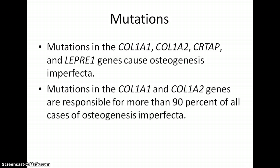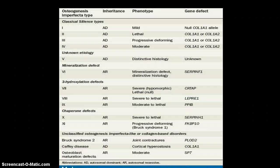Here are some mutation locations — I'm not going to go into detail on them as this is very detailed — along with their inheritance type and genotype. As you can see, there are quite a few recessive cases listed, but they're rarer and don't fall under the classical types 1 through 4.